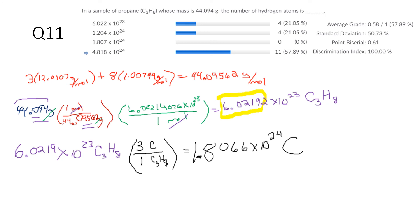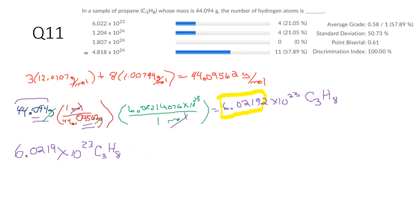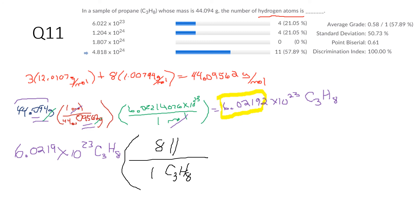Now this is the first time we have a subscript that's not one. Looking at the formula, we've got three carbons for every one molecule of propane, so when you multiply through you get 1.8066×10²⁴ carbons — closest to that answer. For question 10, everything is exactly the same — we still have propane, same mass — until the very end. This question asks about hydrogen atoms. We've gotten down to 6.0219×10²³ molecules of propane, but now per one molecule there are 8 hydrogens from that subscript, giving a final answer of 4.8175×10²⁴ hydrogen atoms.